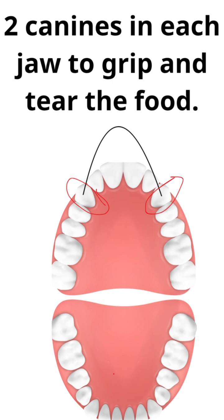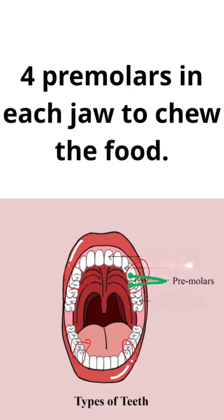After that, you will find 2 premolars in each side, so we have 4 premolars in each jaw to chew the food.